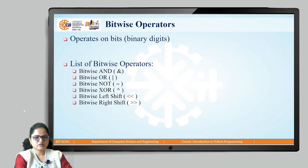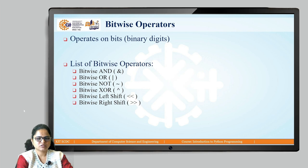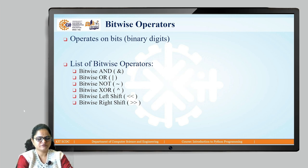Next is bitwise operators in Python. Bitwise operators operate on bits, that is, on binary digits 0s and 1s. We have different bitwise operators available in Python: bitwise AND, bitwise OR, NOT, XOR, left shift and right shift. We will see them one by one.